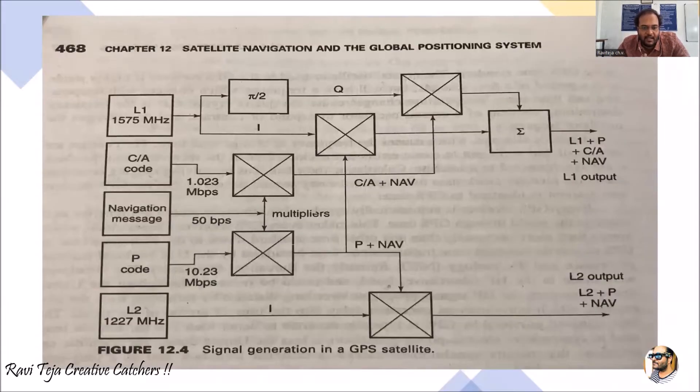This is a signal generation in a GPS satellite, a basic block diagram. Here we can see this is an L1 band with respect to 1575 megahertz of frequency, and this is L2 with respect to 1227 megahertz of frequency.